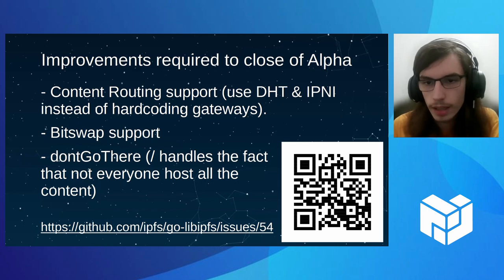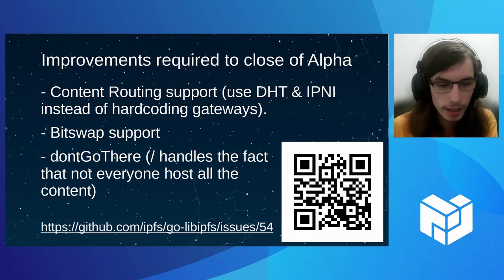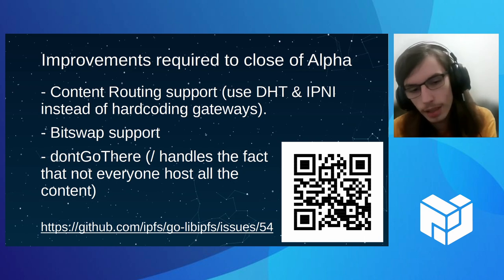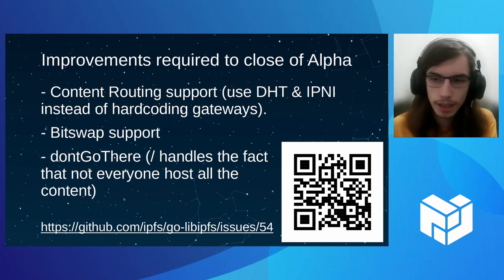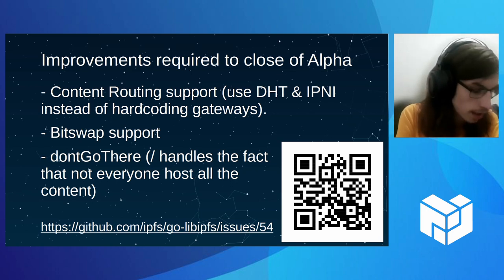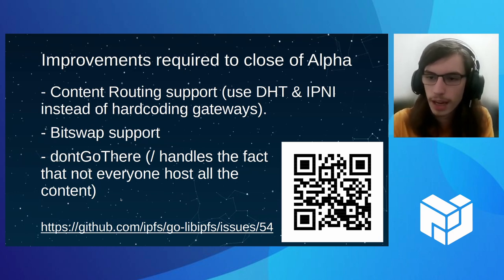The main reason Rapid is not yet shipping in Kubo is because it lacks critical features. Content routing: currently I just have a hard-coded list of gateways — we'll need to use DHT and IPNI. BitSwap support is very important for Kubo because all the content we download today is in BitSwap. And there's a small fix needed to the algorithm: right now it assumes that everyone has all the content, which is true for a gateway because even if the gateway doesn't have the block it will fetch it for you. So I need logic that remembers when a peer doesn't have a block I want. And that's all.